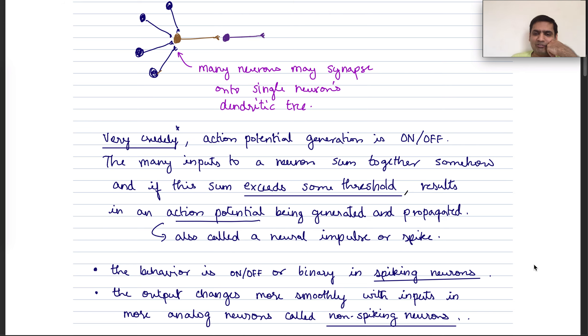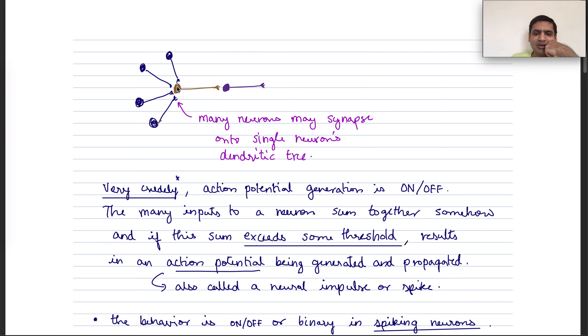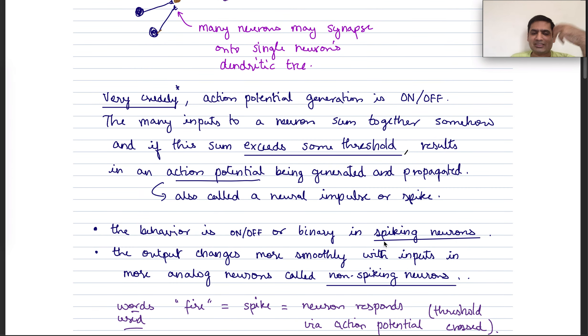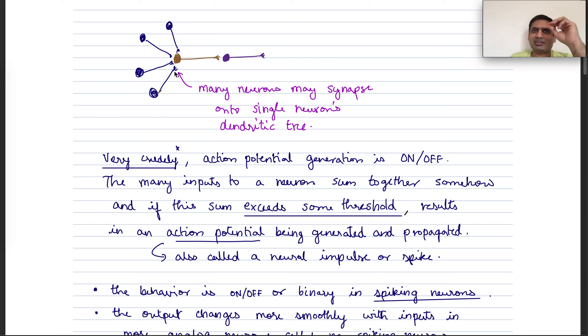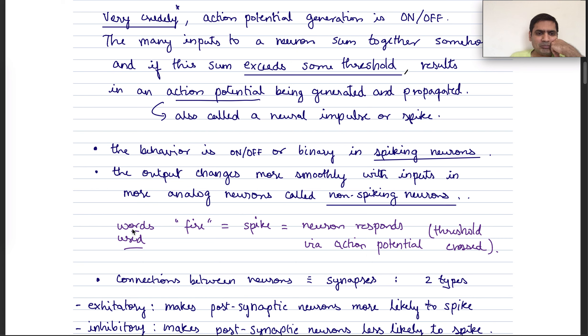This kind of on-off or binary behavior in neurons is specific to what are called spiking neurons, neurons that produce these traveling wave action potentials. There are also other kinds of neurons called non-spiking neurons, and they are more analog, where inputs sum together and the output is more continuously modulated as a function of the inputs. Whereas in spiking neurons, it's discontinuous, where if it's below a threshold, nothing happens. If it's above a threshold, something dramatic happens and a signal gets transmitted. People use words like fire and neuron fires and neuron spikes, and all those words just mean that a neuron responds via an action potential. In other words, some kind of threshold gets crossed.